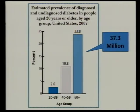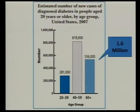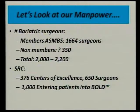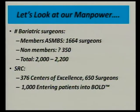How are we going to deliver the care? Today, the estimate by the CDC is that we have 37.3 million Americans who have either diagnosed or undiagnosed diabetes. Just the new cases alone are 1.6 million people. And if we had to operate on just this group of people, every bariatric surgeon would have to do 800 cases. So let's look at our manpower — no one really knows how many people are doing bariatric surgery, so we have to guess at it.